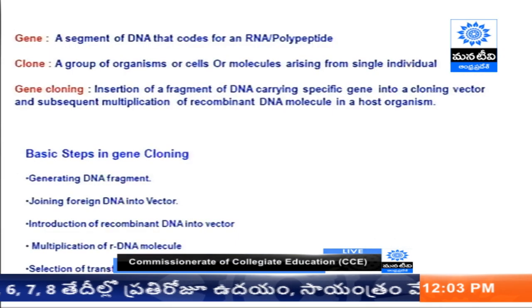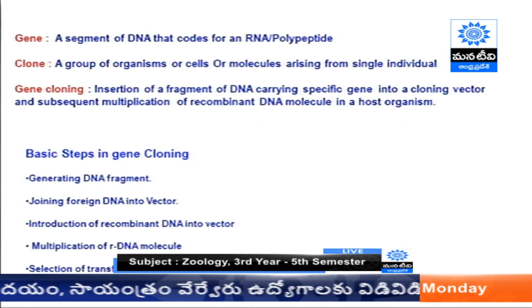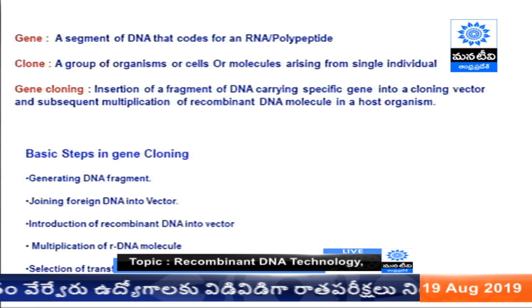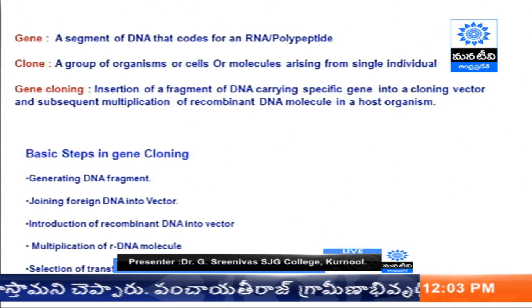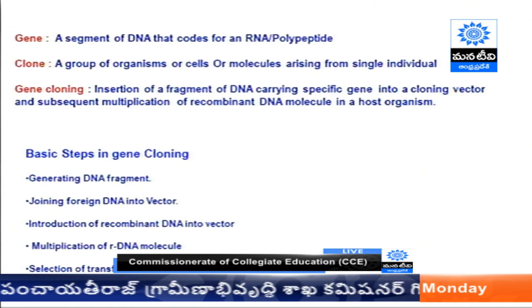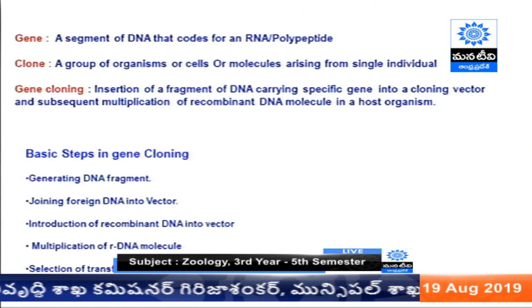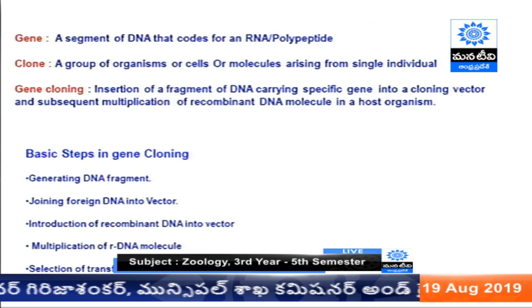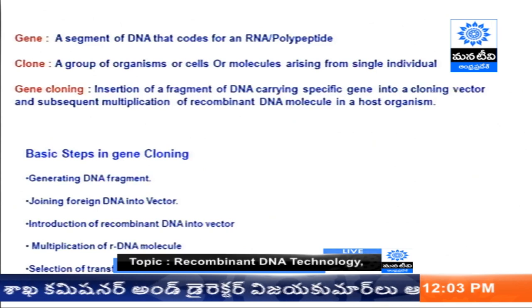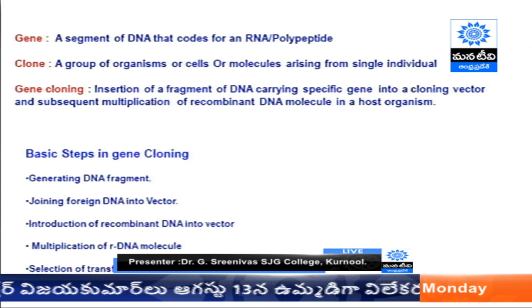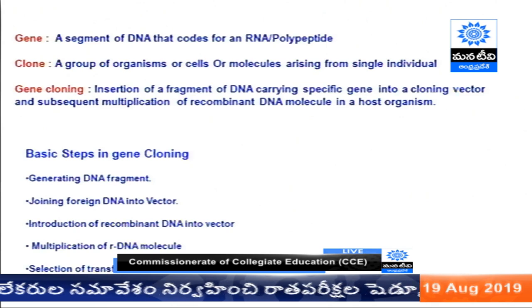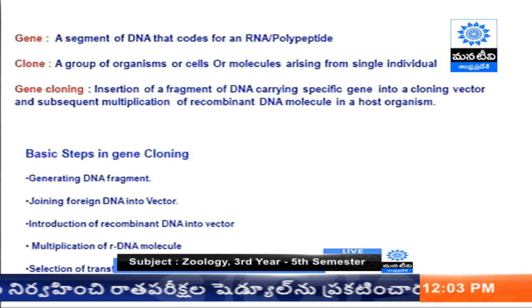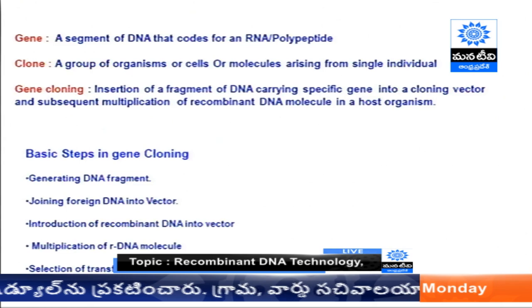What is meant by a gene? A gene is a segment of DNA which codes for an RNA or a polypeptide. A clone is a group of organisms, cells, or molecules arising from a single individual. We will take a target DNA — a specified DNA which we require — and clone it into a number of copies. That is called gene cloning.